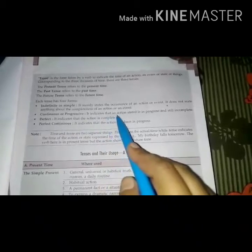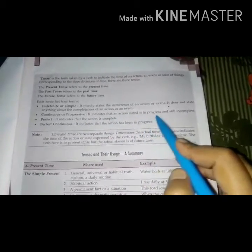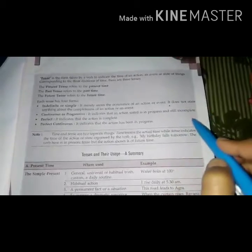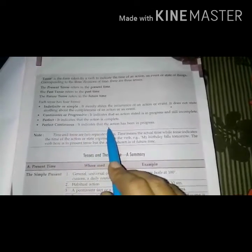Continuous or progressive indicates that an action stated is in progress and still incomplete. Perfect indicates that the action is complete. Perfect continuous indicates that the action has been in progress.